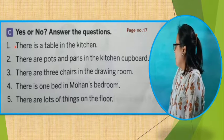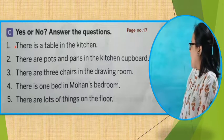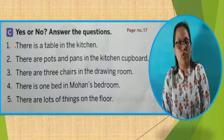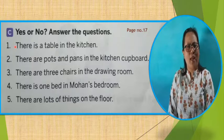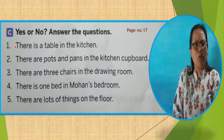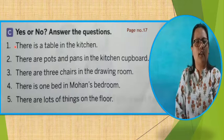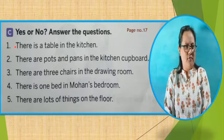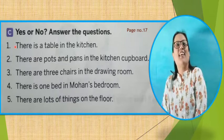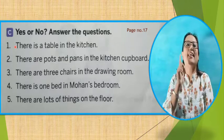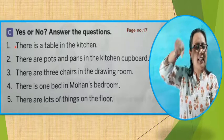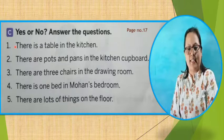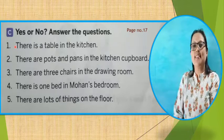Number 2: There are pots and pans in the kitchen cupboard. Was there pots and pans in the kitchen cupboard? Yes or no? Yes — the answer is Y-E-S, yes. Because in that cupboard, those plates, pots and pans were there. That's why the answer is yes.